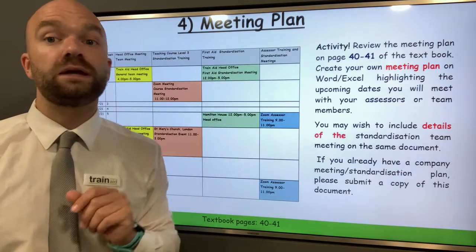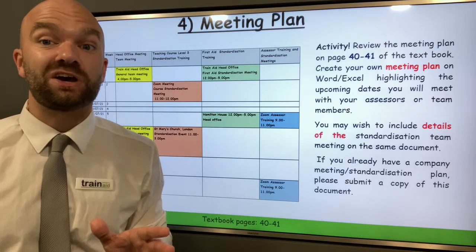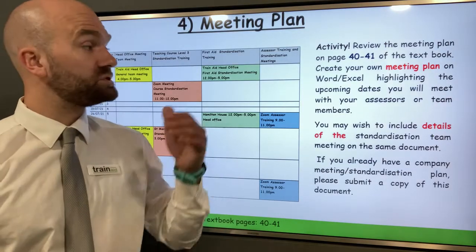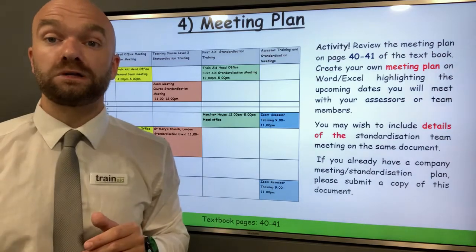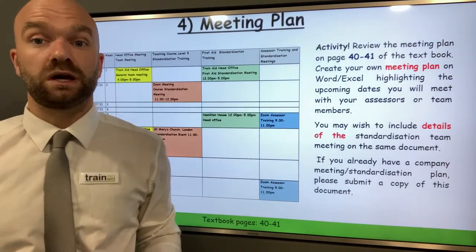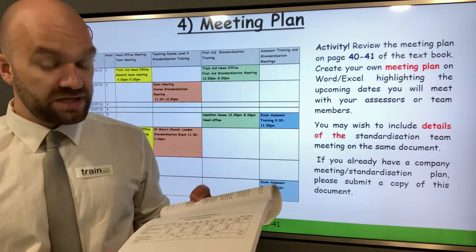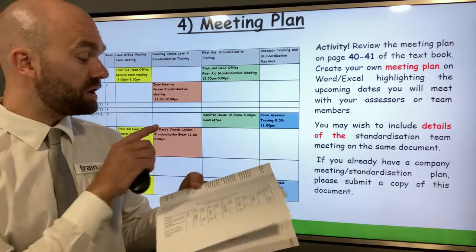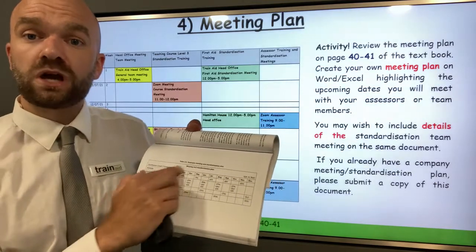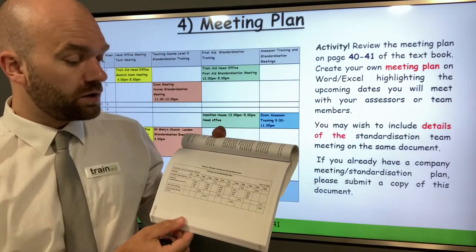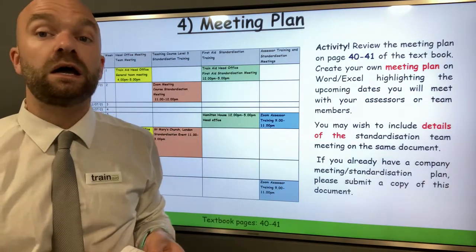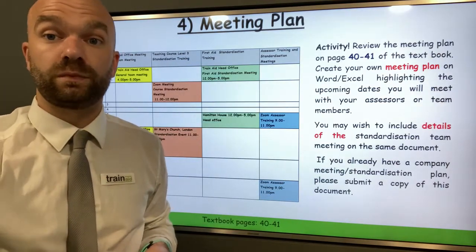The meeting plan should be no more than one page, and can be submitted as an Excel spreadsheet, a Word document, or any table your organisation uses. Please do have a look at textbook pages 40 to 41, which shows an example of a meeting and standardisation plan — do have a look at that as another source of information.